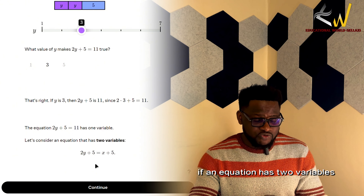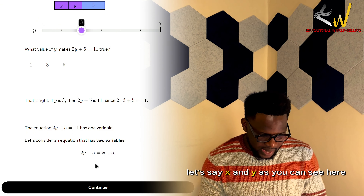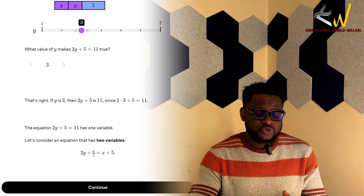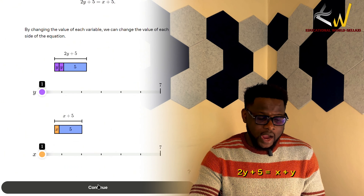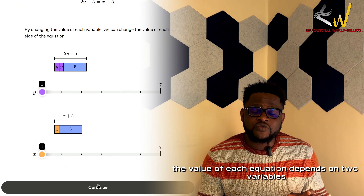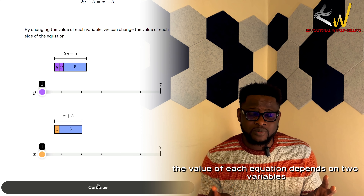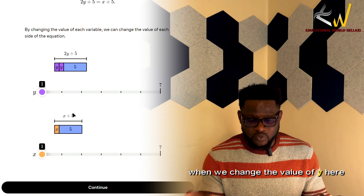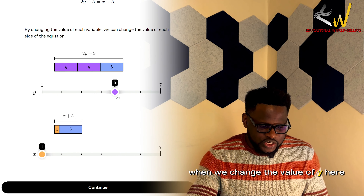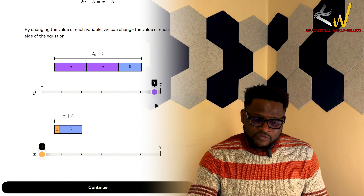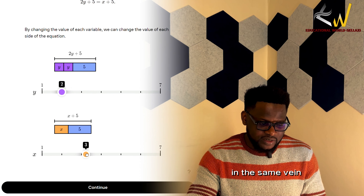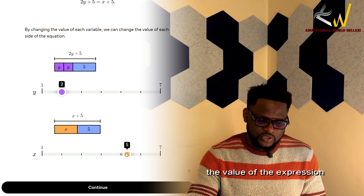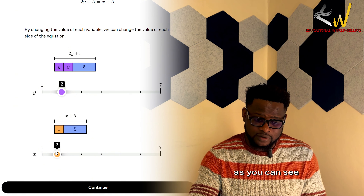If an equation has two variables, let's say x and y — as in 2y plus 5 is equal to x plus y — the value of each expression depends on two variables, x and y. When we change the value of y, the value of the first expression changes. In the same vein, when we change the value of x, the value of the expression also changes.